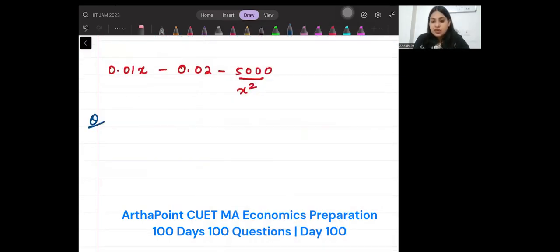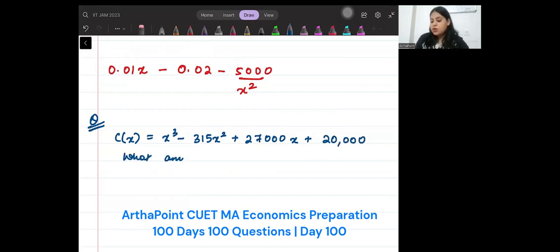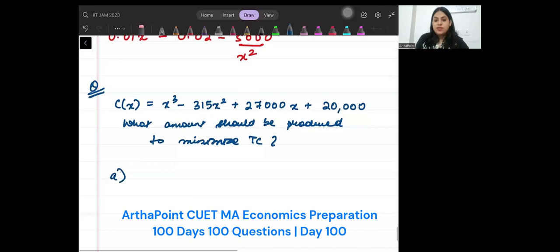So beta, you are given that the total cost function is x³ - 315x² + 27,000x + 20,000, right? You have to determine what amount should be produced to minimize the cost. The options are first 350, second 150, third 450 and fourth 250. What amount should be produced to minimize the cost?